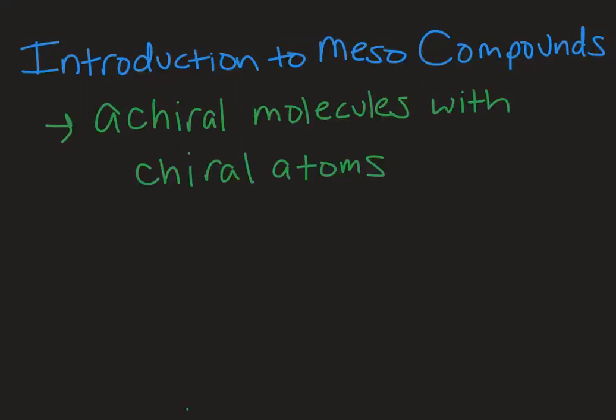Welcome to Chemistry with Caroline. In this video, we're going to take a look at meso compounds. Meso compounds are a special class of stereoisomers where it's an achiral molecule, but it has chiral centers in it. That's because it has a line of symmetry throughout the molecule, and that makes it superimposable with its mirror image, and so achiral.